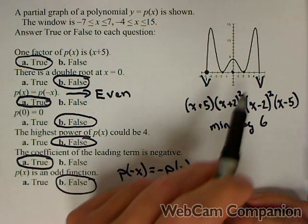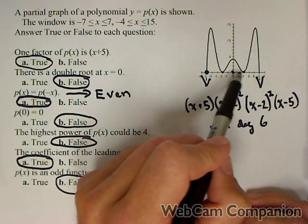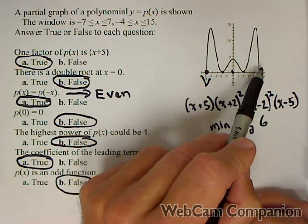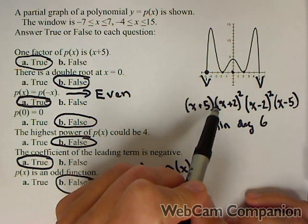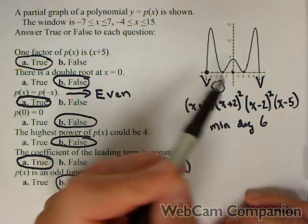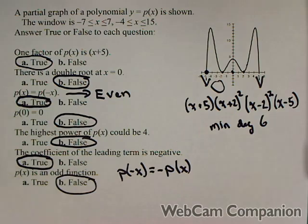But even if we didn't know that, an odd function means basically we have symmetry with respect to the origin. So if we flipped it over both the y and the x-axis, it would look exactly the same. Well, there's nothing down here to match this, so there's no way it can be odd.